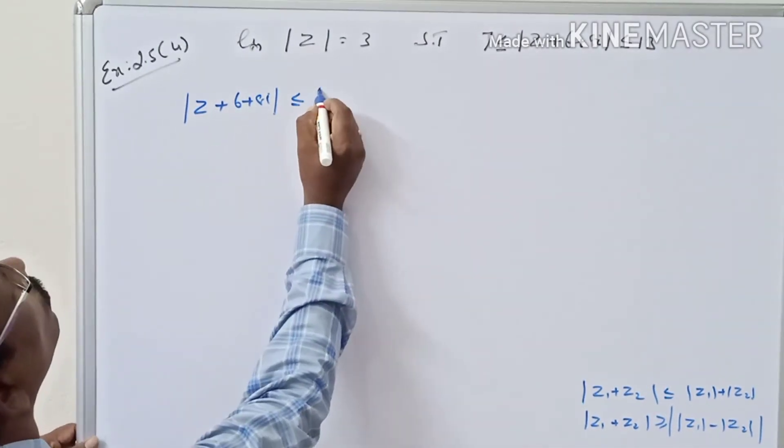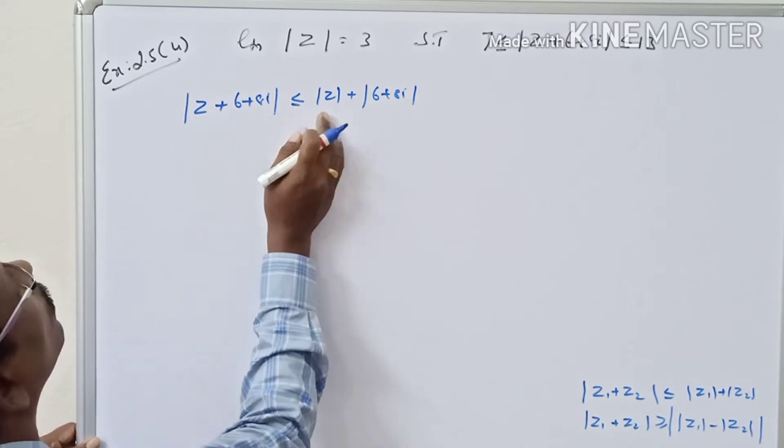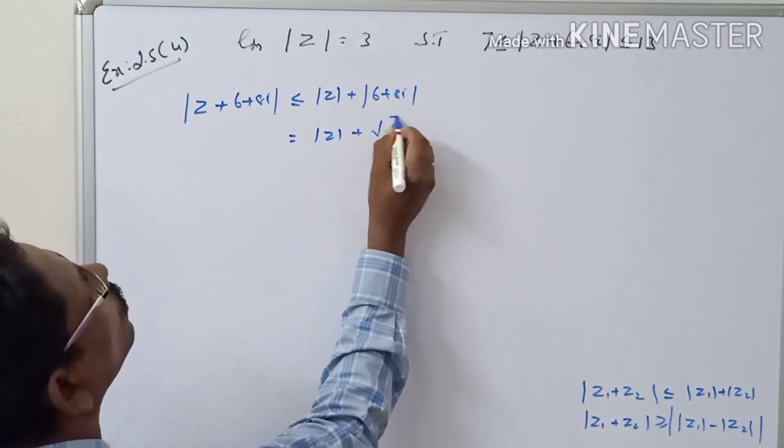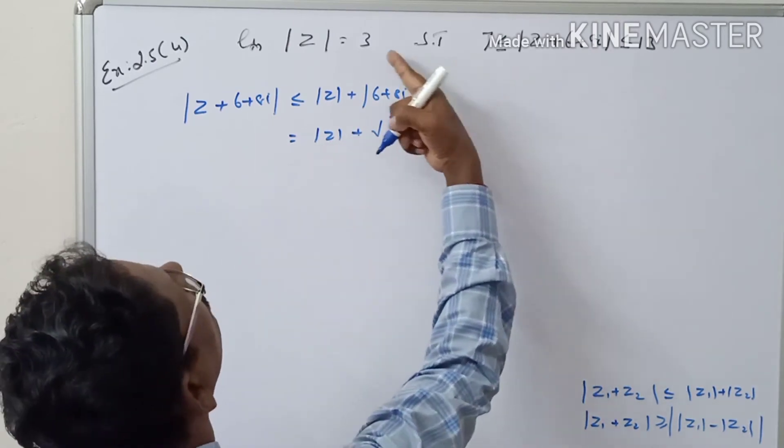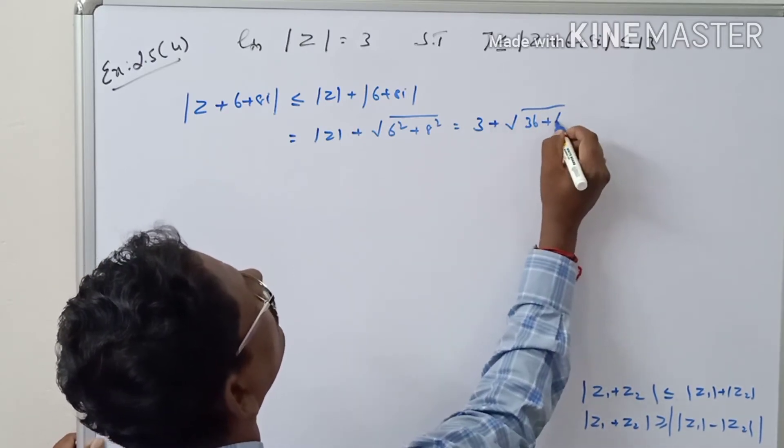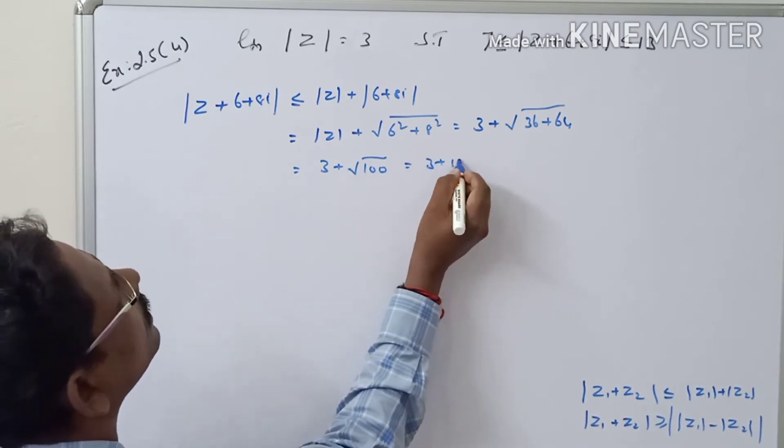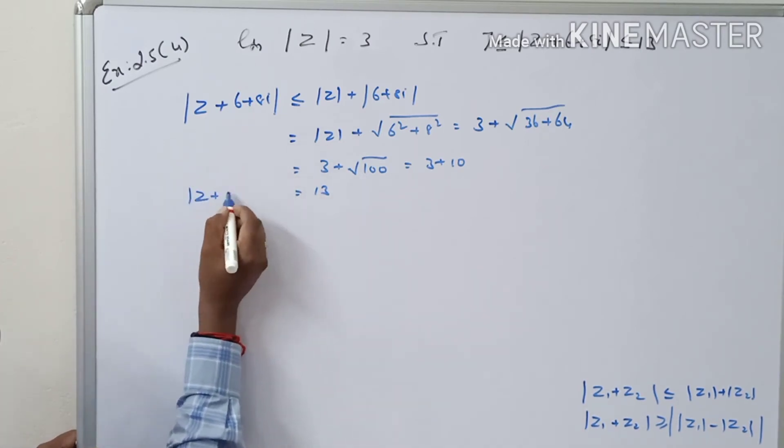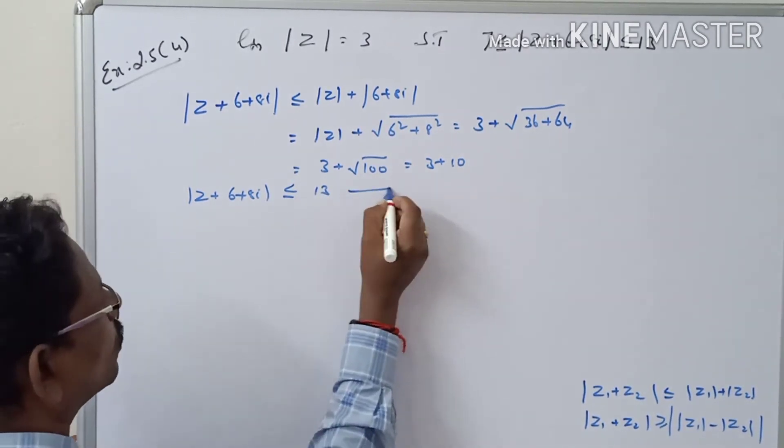Now it is equal to |z| + |6 + 8i| = |z| + √(6² + 8²) = 3 + √(36 + 64) = 3 + √100 = 3 + 10 = 13. Therefore |z + 6 + 8i| ≤ 13, equation number 1.